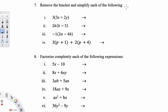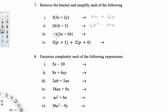Question 7 is about expanding brackets and question 8 is the opposite — factorization. For part 1, this 3 will multiply 3x giving 9x, and the 3 multiplies 2y giving positive 6y. For part 2, 2k multiplied by k gives 2k squared, and 2k multiplied by negative 5 gives negative 10k. If you have a negative 1 in front of the bracket, it changes the sign of everything inside: negative 1 by 2a gives negative 2a, and negative 1 by negative 4b gives positive 4b.